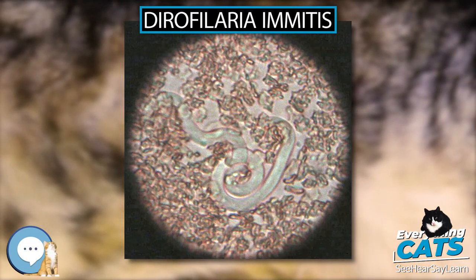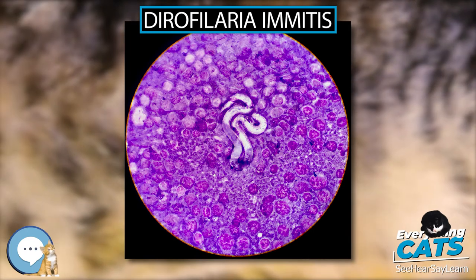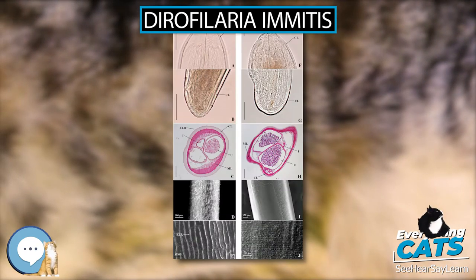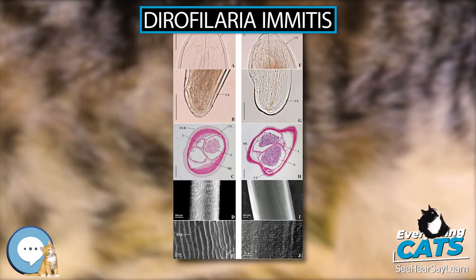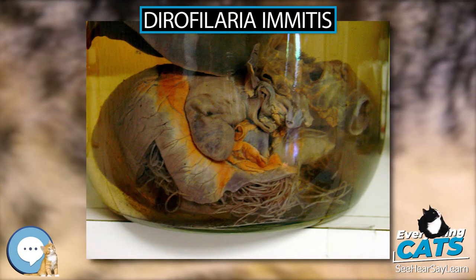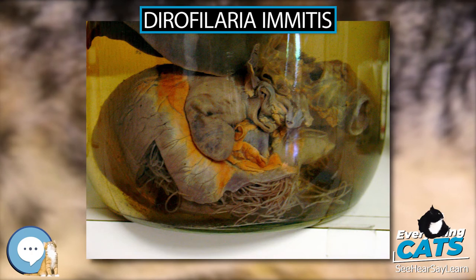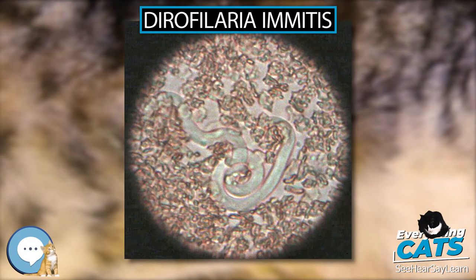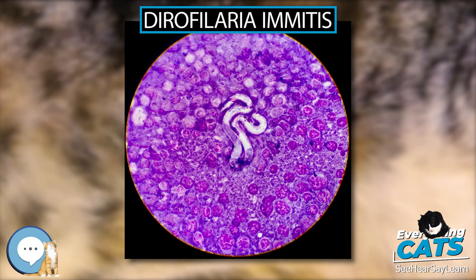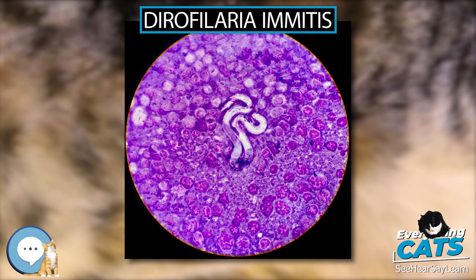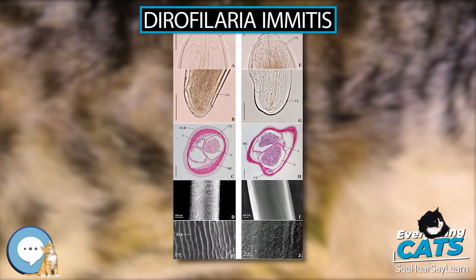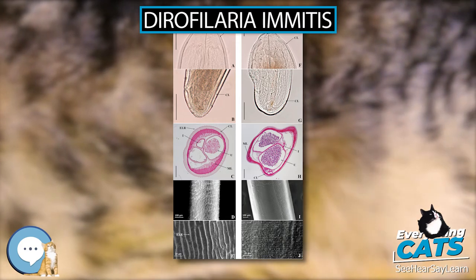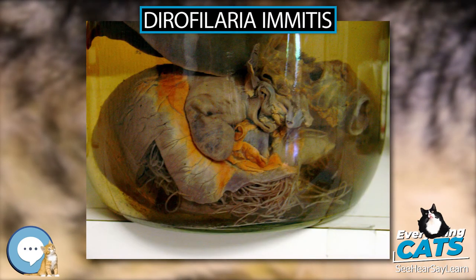If an animal is diagnosed with heartworms, treatment may be indicated. Before the worms can be treated, the dog must be evaluated for heart, liver, and kidney function to assess the risks of treatment. Usually, the adult worms are killed with an arsenic-based compound. The currently approved drug in the U.S. is melarsomine, marketed under the brand name Immiticide. It has greater efficacy and fewer side effects than the previously used drug thiacetarsamide, sold as Caparsolate, making it a safer alternative for dogs with late-stage infections.